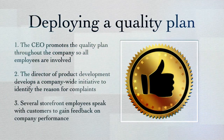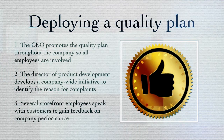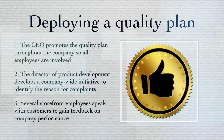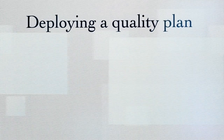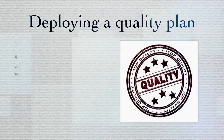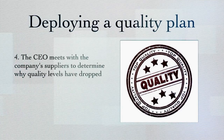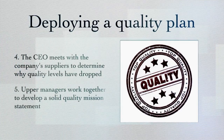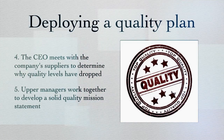Option four: the CEO meets with the company's suppliers to determine why quality levels have dropped. Option five: upper management works together to develop a solid quality mission statement. What do you think? Who does what in implementing quality management plans?